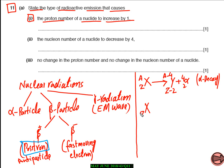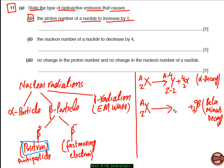For beta minus decay, if nucleus X with mass number A and atomic number Z emits a beta minus particle, the new nucleus Y is formed with its atomic number increasing by 1, while the mass number does not change. At IGCSE level you only need to understand beta minus decay; beta plus decay is studied at A-level.